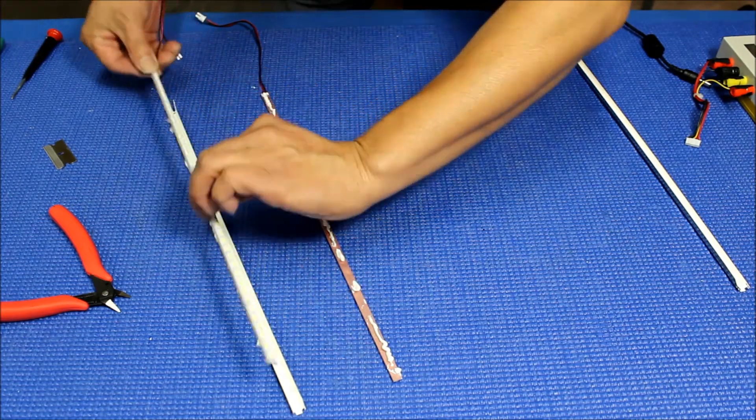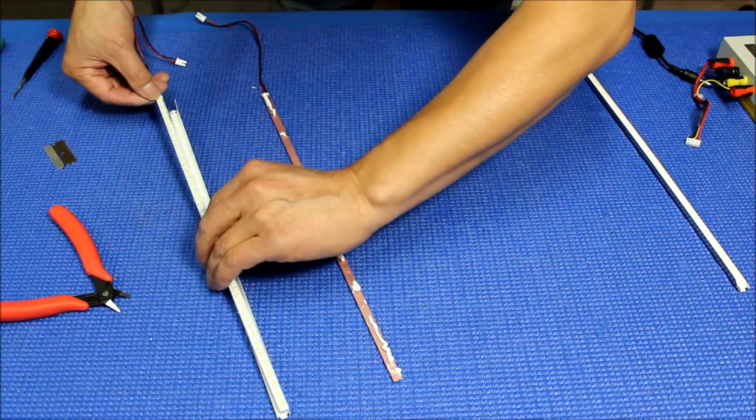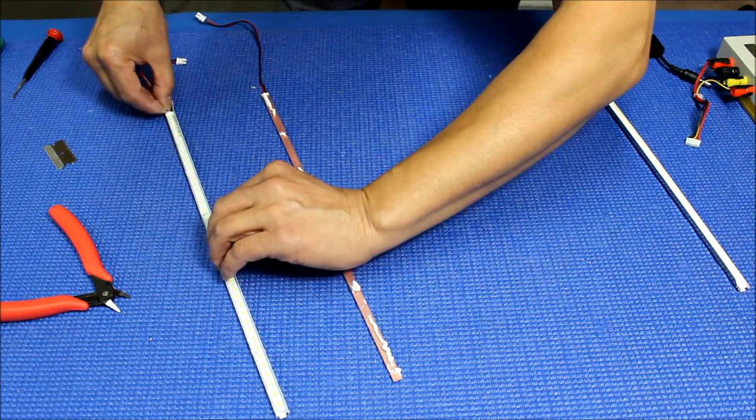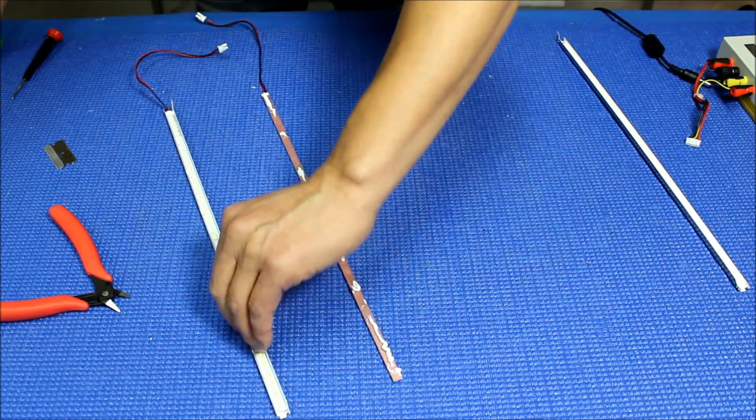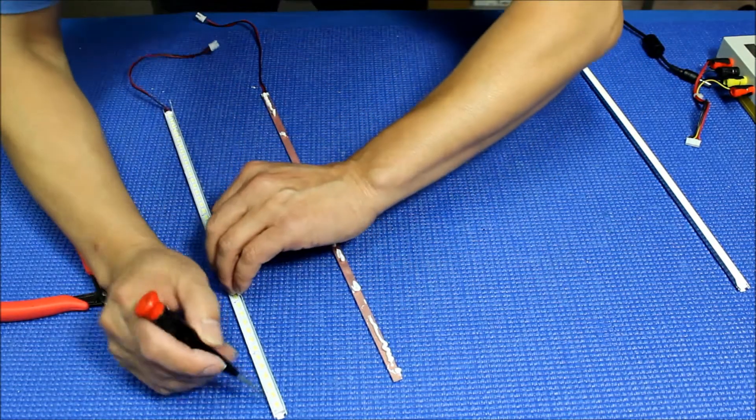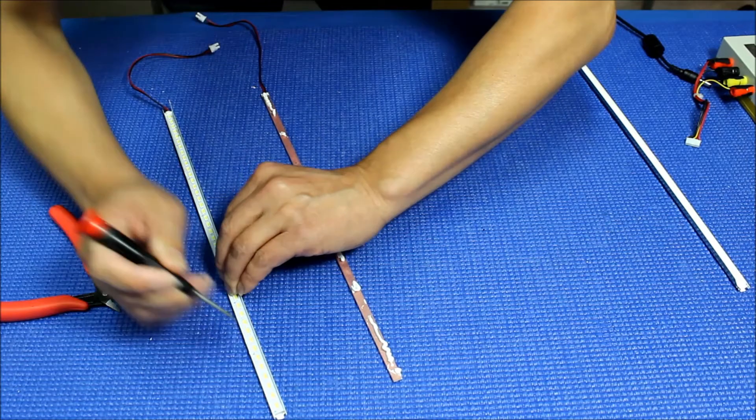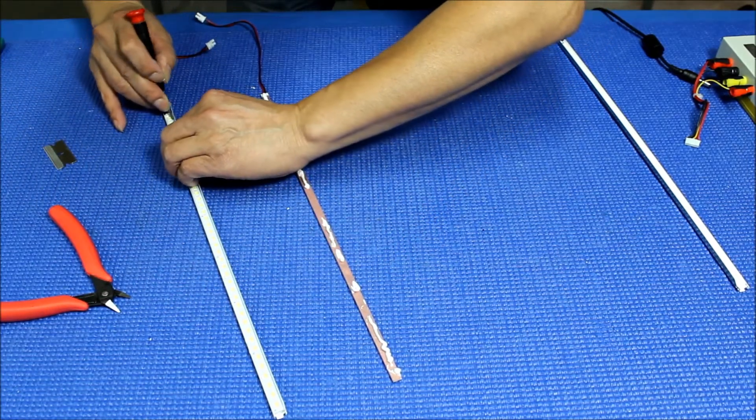Just flip it over like this. Make sure it's flat. Push it a little bit. You can see the glue come out a little bit. That's perfect.